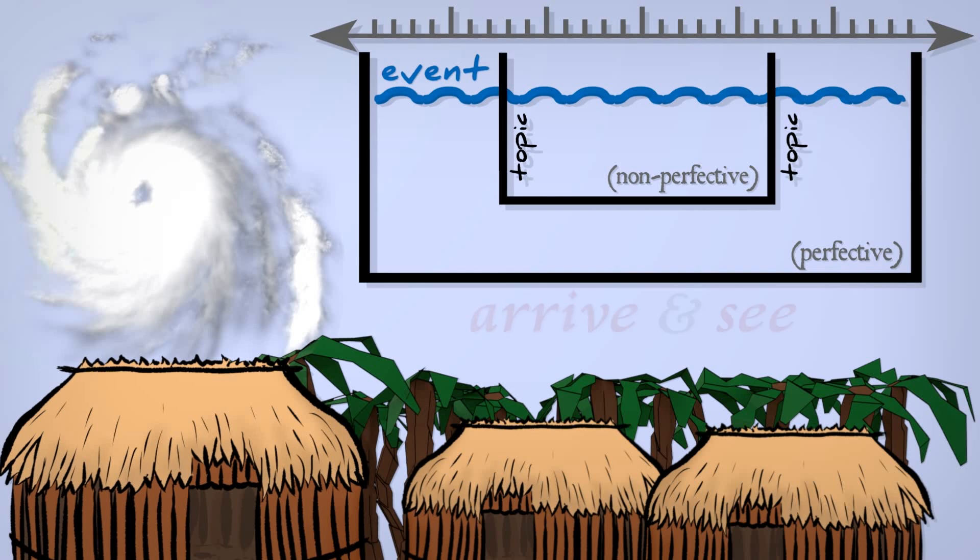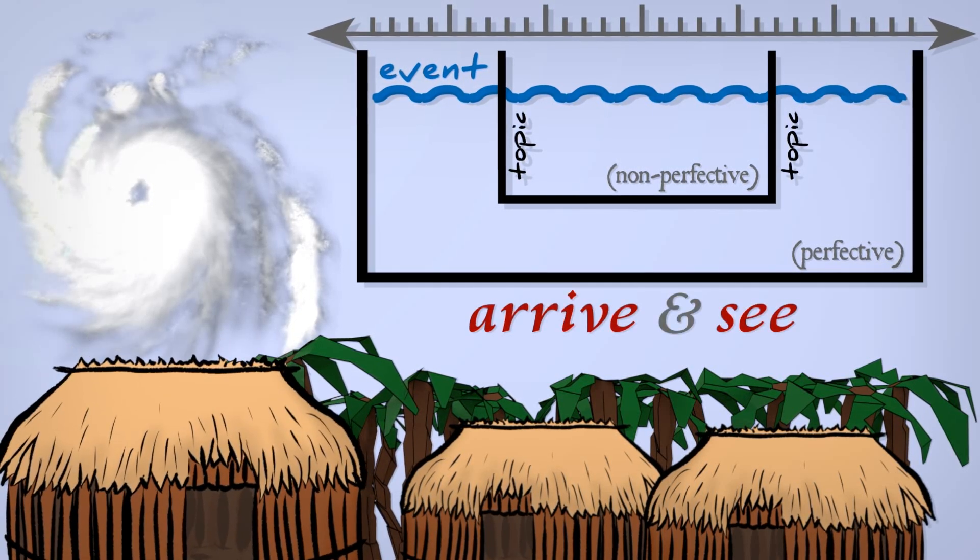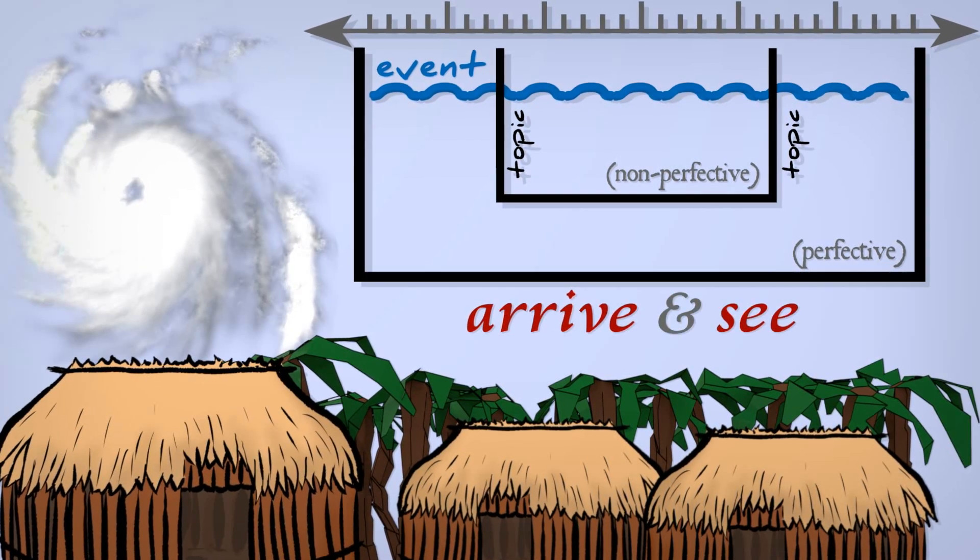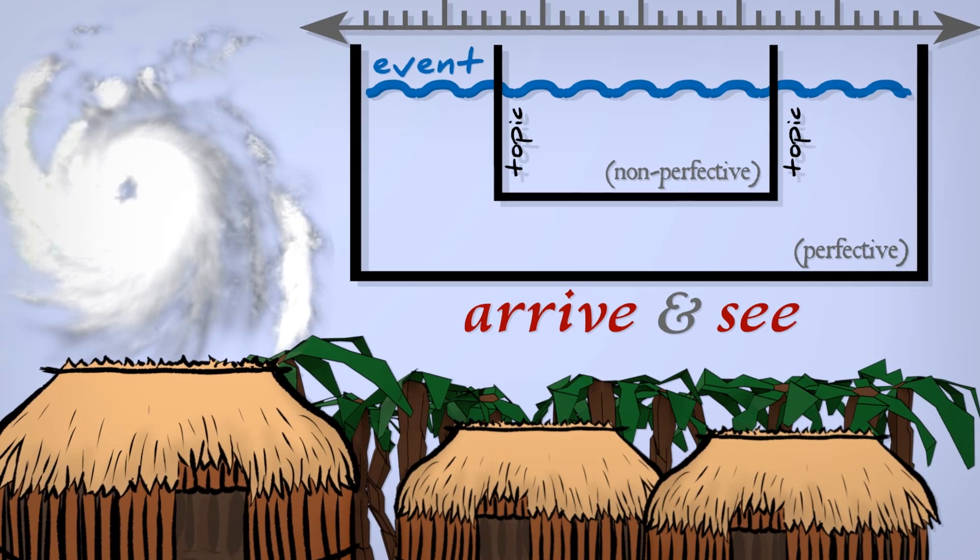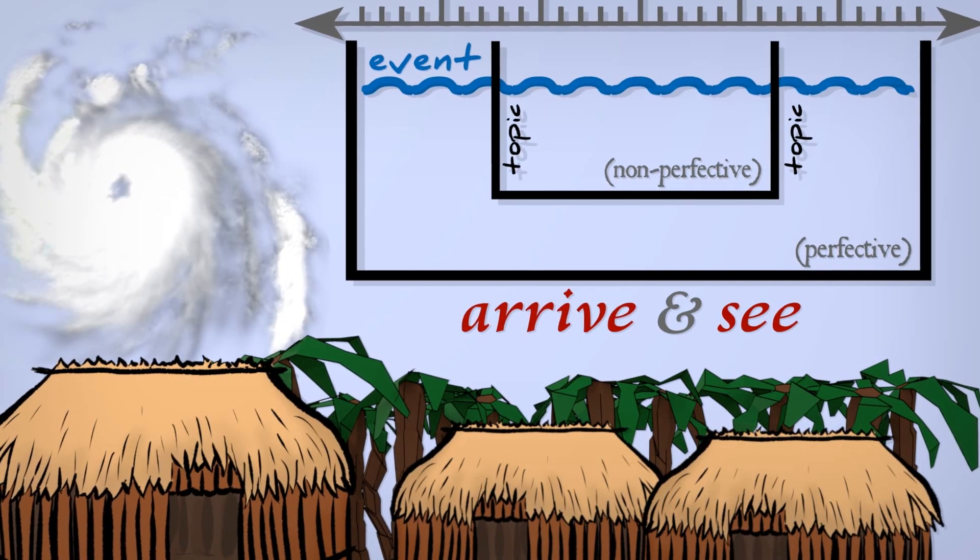First, a new topic is set up. Arrived in town, realized what was happening. This is the reference point for the whole thing. Then comes a chain of non-perfectives.